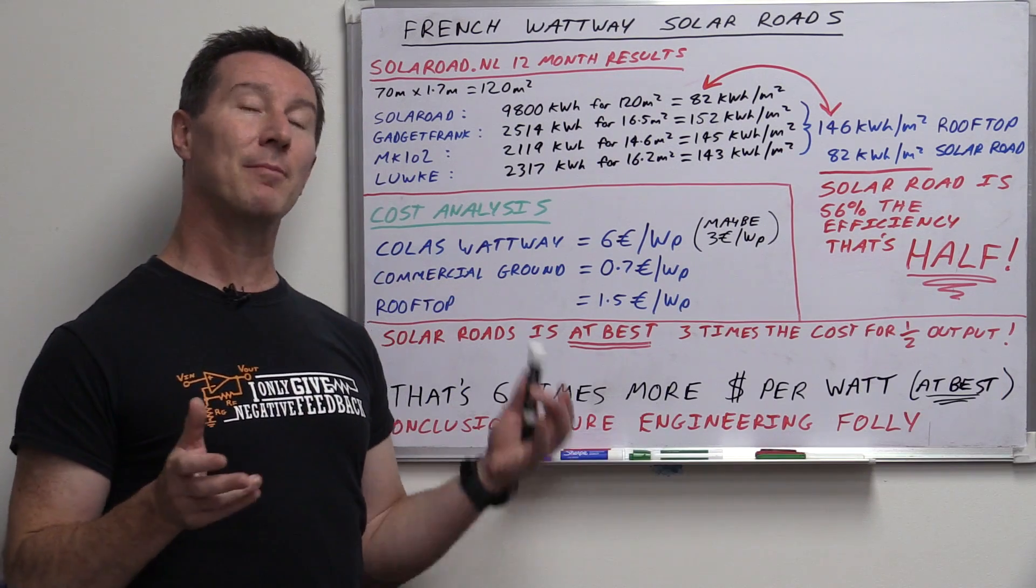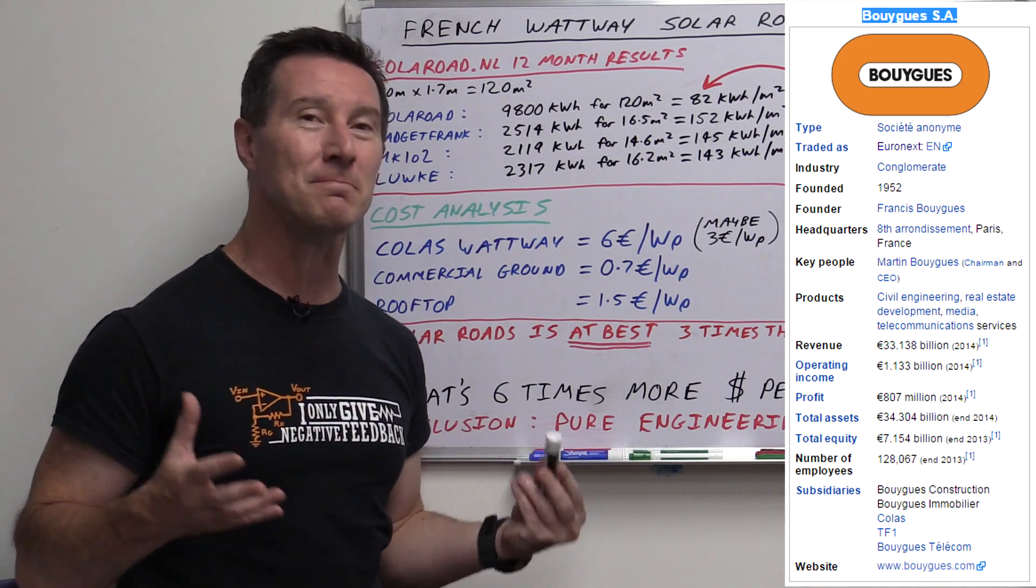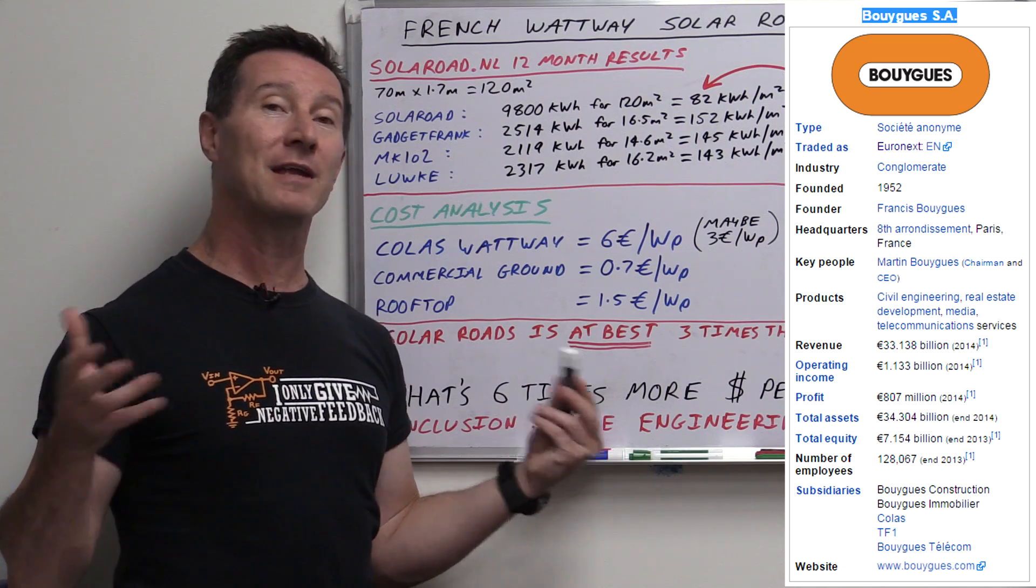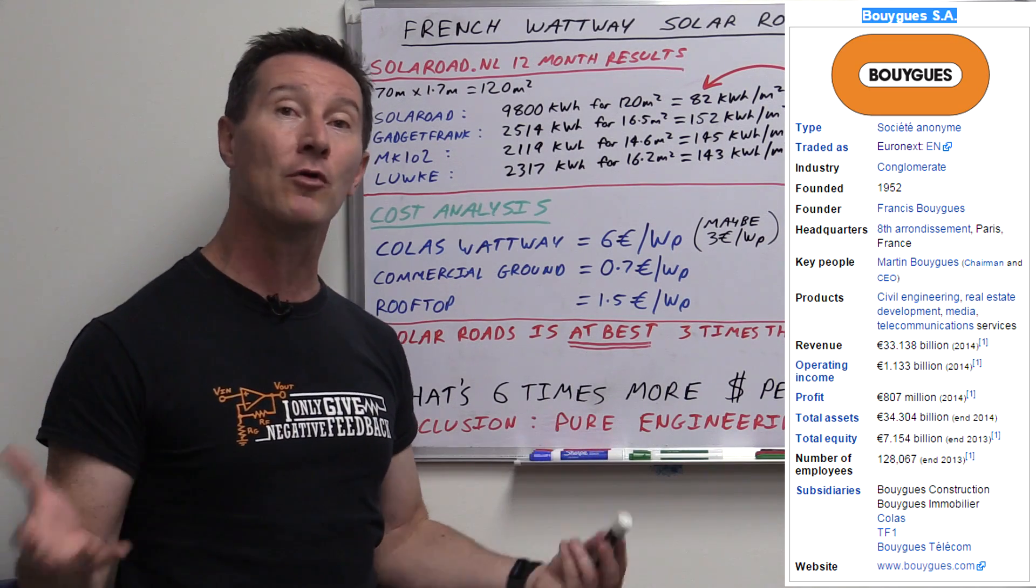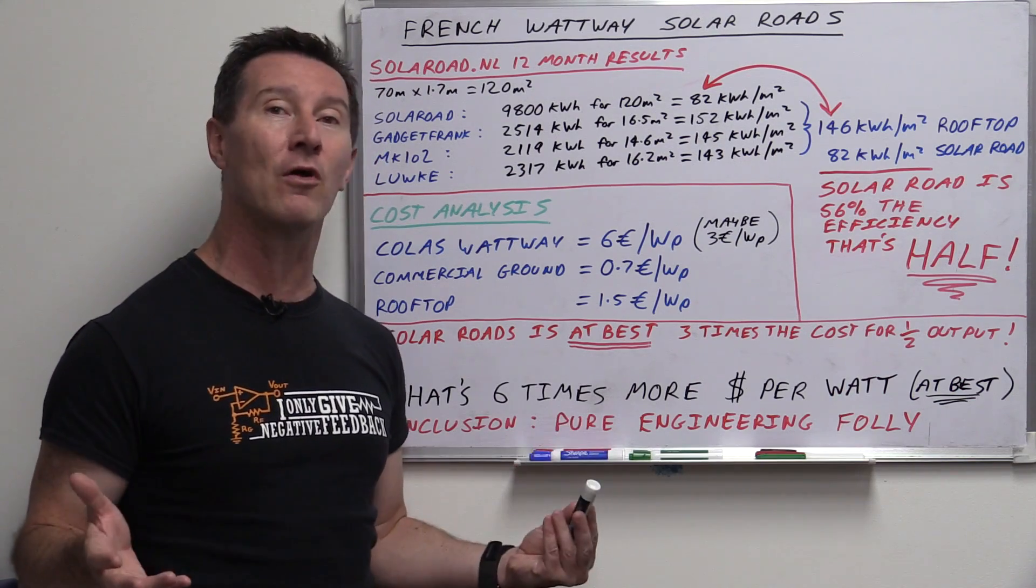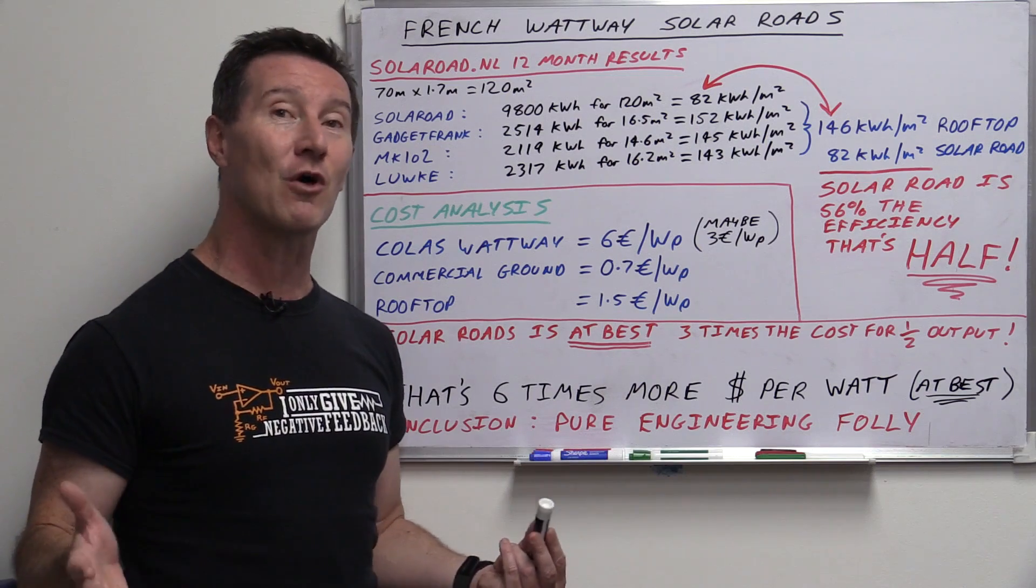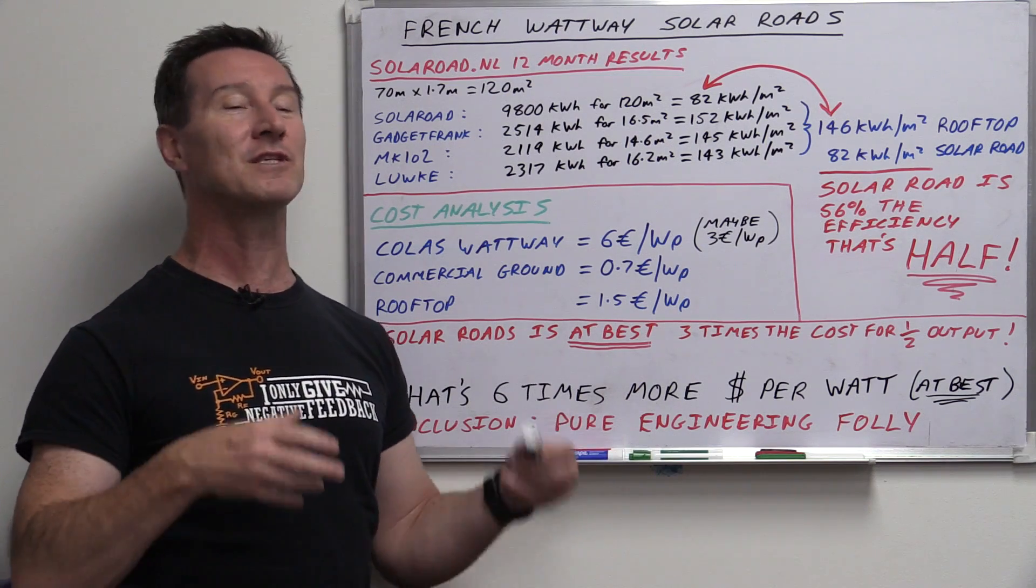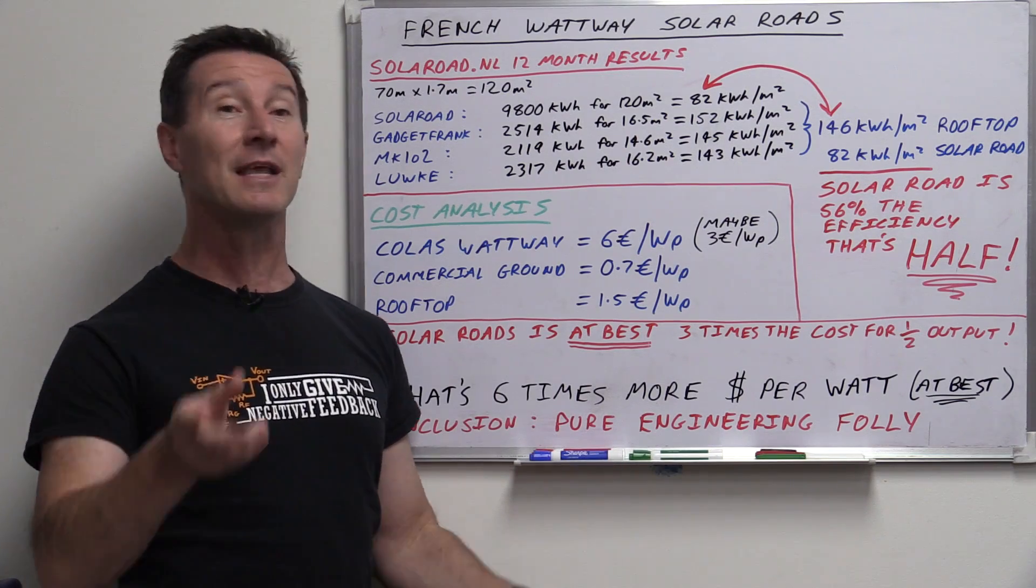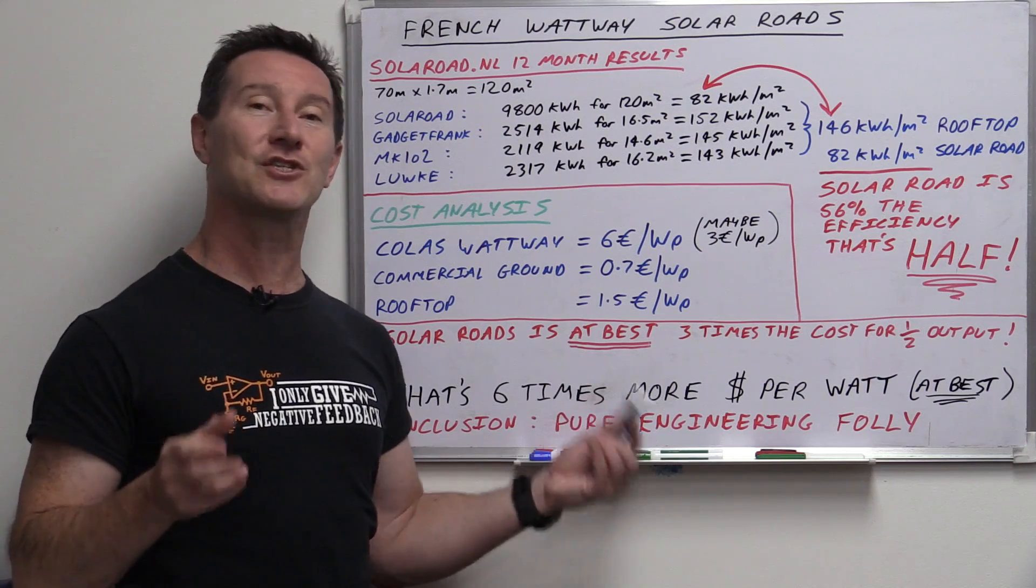Now, this French system from a company called Colas, who's part of a bigger group, a $30 billion company, they're one of France, if not Europe's, biggest road infrastructure companies. They build roads. So they know road technology. If anyone can build a solar road, it's them. They've spent five years on this, countless amounts of money actually developing this thing, and I will grant them this, it is the best effort yet at solar roadways.